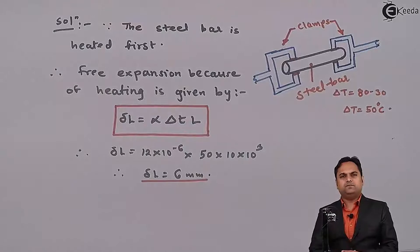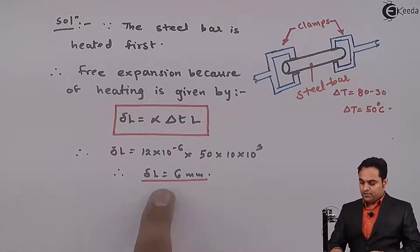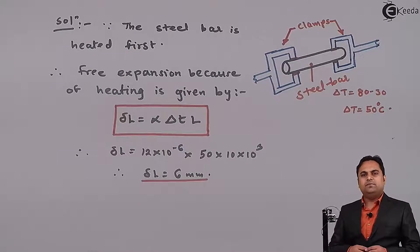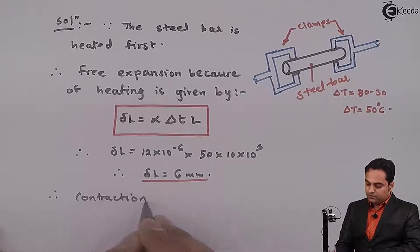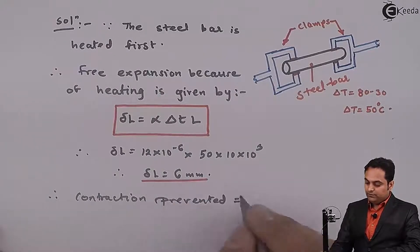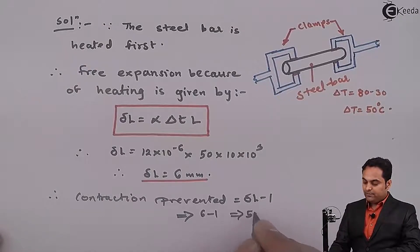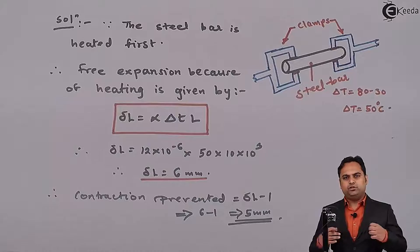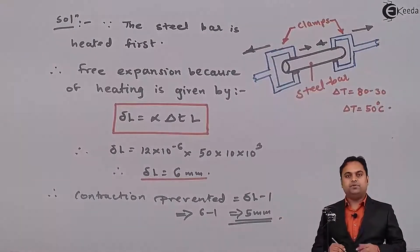Now after finding the free expansion, this steel bar is allowed to contract, and when it is allowed to contract only 1 mm contraction is allowed. So how much contraction is prevented: the free contraction will also be 6 mm, but here only 1 mm contraction is allowed. So contraction prevented is equal to delta l minus 1 mm, which gives 6 minus 1, that is 5 mm. This is prevented by the clamps, which pull the rod outward.